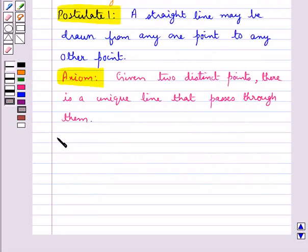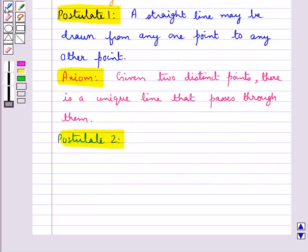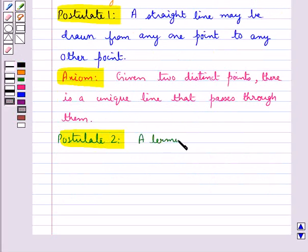Now postulate 2 says that a terminated line can be produced indefinitely.